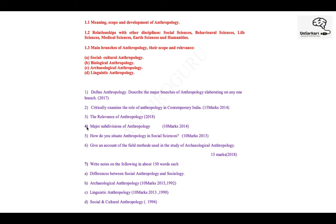The major subdivisions — subdivisions meaning the branches — you will write the major branches and give one or two examples of each, along with the relevance and role in contemporary India. The next question on the situation of anthropology in social sciences asks where and how you situate anthropology — its relationship with different social sciences like history, economics, and polity.